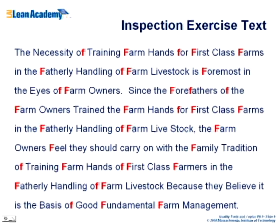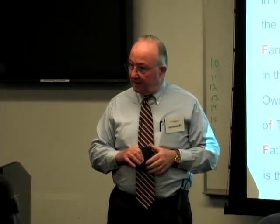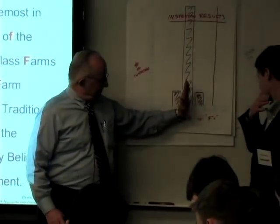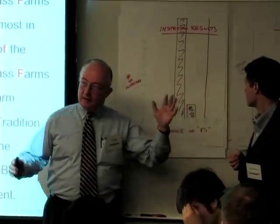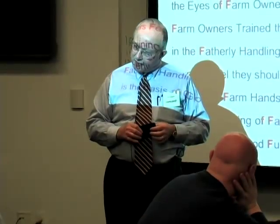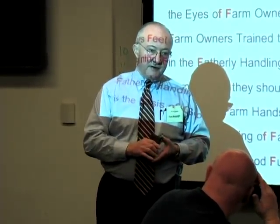Let me show you — there they are. Do you know how many F's there are? 36. We now have 100% of the class that got it wrong. The ones we've missed are what we call in the business escapements — it's a quality escapement. Whatever process we put in place didn't catch the defect.